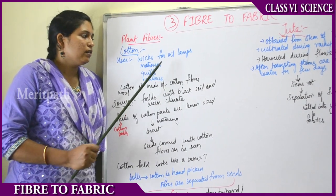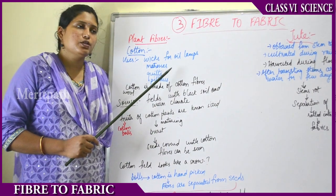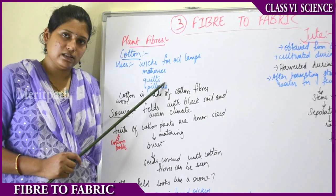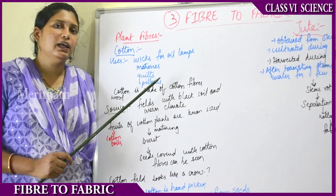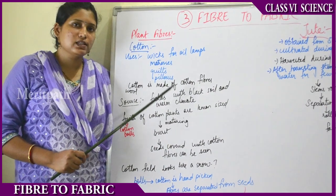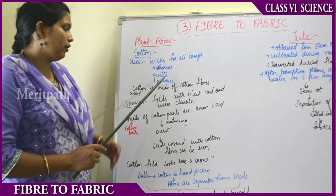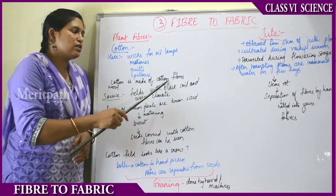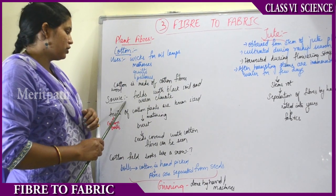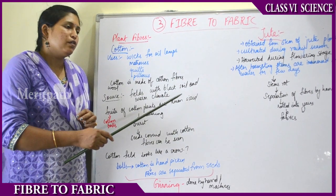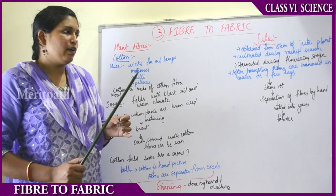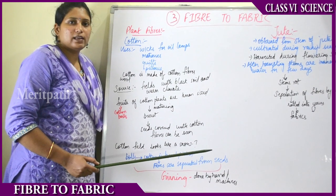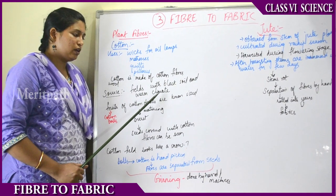Mattresses we sleep on — both bed mattresses and sofa mattresses — are usually made of cotton fibers. Quilts keep us warm during winter because they trap air inside. Pillows we rest our heads on are also made of cotton. Cotton is sourced from agricultural fields with black soil and warmer climate — it is grown as a crop in areas where temperatures are usually warm and there is less rainfall.